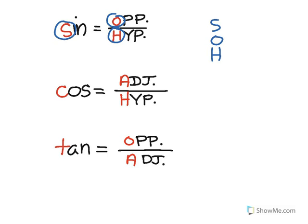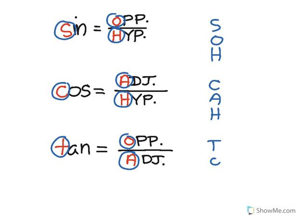The cosine ratio is adjacent over hypotenuse: C-A-H. So I have SOH-CAH. And then the tangent ratio is the ratio of the opposite leg over adjacent leg: T-O-A. So we have SOH-CAH-TOA. It sounds like an Indian princess name. SOH-CAH-TOA is the acronym we use to remember the ratios.